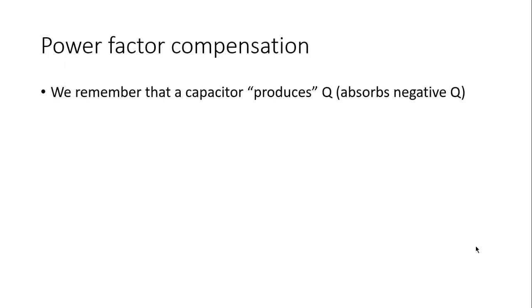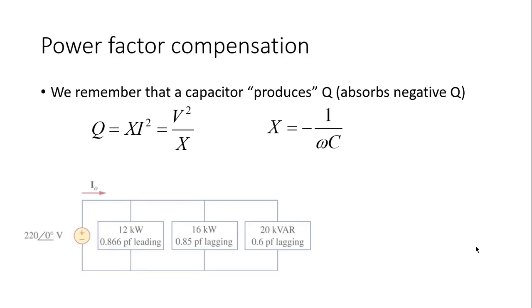For power factor compensation we remember that a capacitor produces Q because it's absorbing negative Q. Given by this formula, if we know the rms value of the current in the capacitor, or if we know the rms value of the voltage in the capacitor, which is our case today, we know that the rms value of the voltage in the capacitor is 220 volts. If we know the reactance of the capacitor and the frequency at which the system operates, omega, we can find what is the capacitance and that is what we will do.